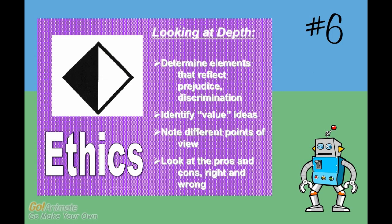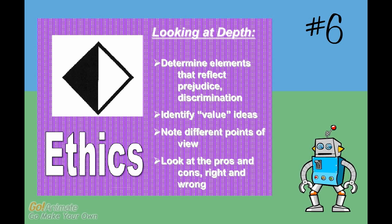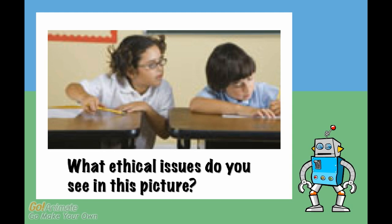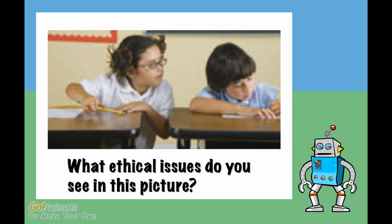The sixth icon is a black and white diamond. It stands for ethics, or the good and bad, pros and cons of something. Do you see anything wrong with what the girl in the picture is doing? She is cheating. This would be an ethical issue. Are there any ethical issues related to your topic?